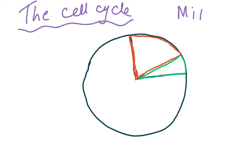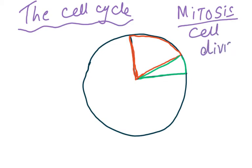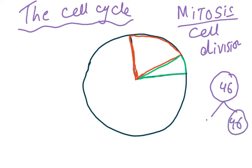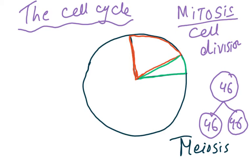Mitosis is a type of cell division that results in the same chromosome number as the parent cells — so if the chromosome number is 46, the daughter cells will also have 46. This is in contrast to meiosis, studied in A2, which is called the reduction division because the chromosome number is halved. Mitosis occurs throughout the body and plays important roles in growth, cell replacement, repair of tissues, and asexual reproduction.